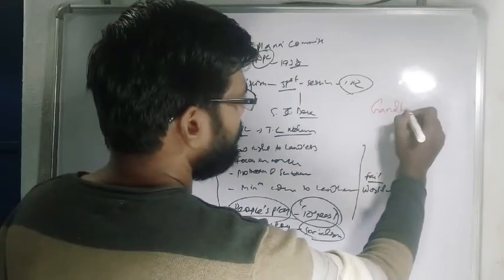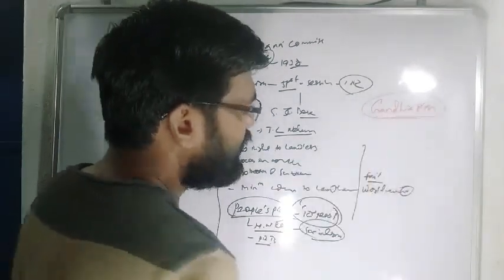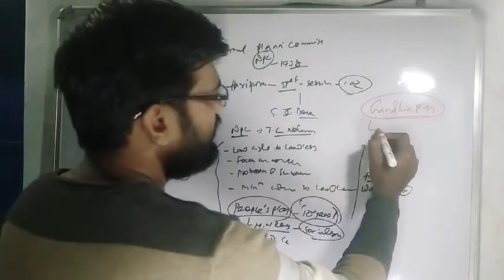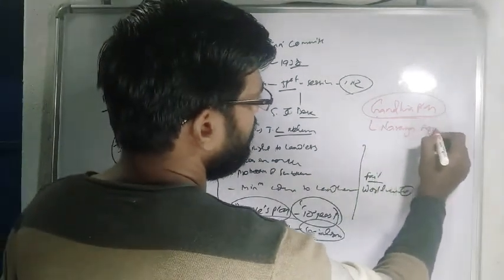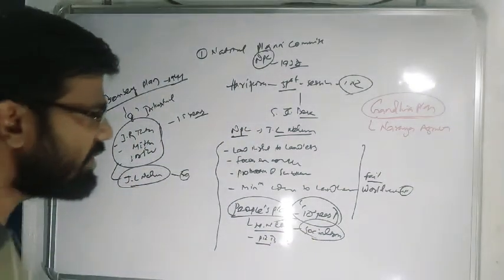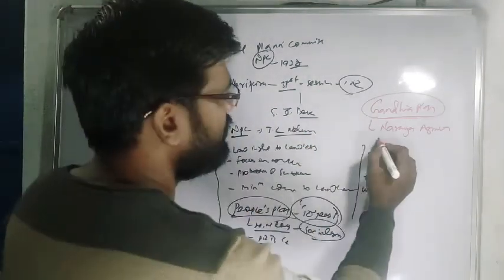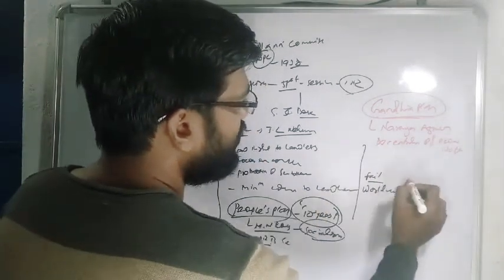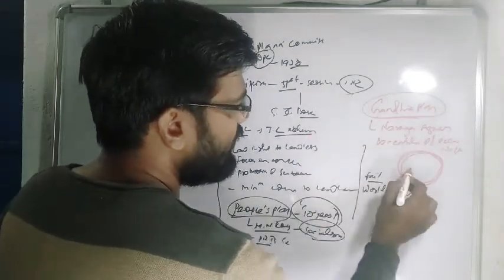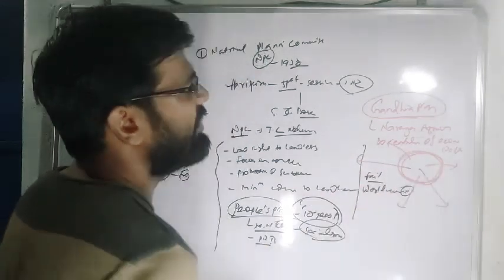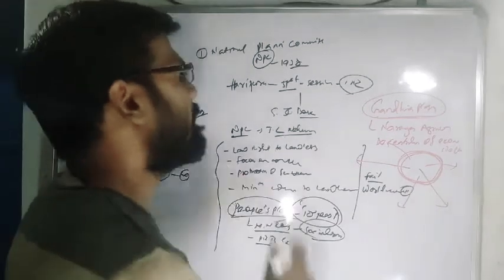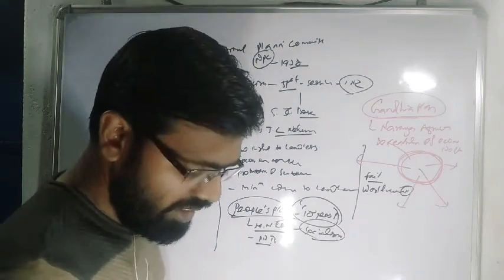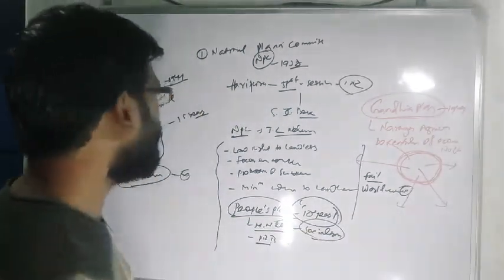Next is the Gandhian Plan. The major objective of the Gandhian Plan was decentralization of economic wealth. This was the centralization of power versus decentralization of economic wealth. This Gandhian Plan was brought by Narendra Agrawal in the year 1944.